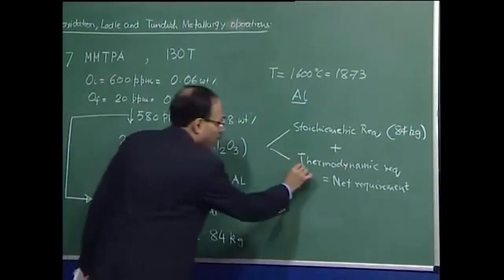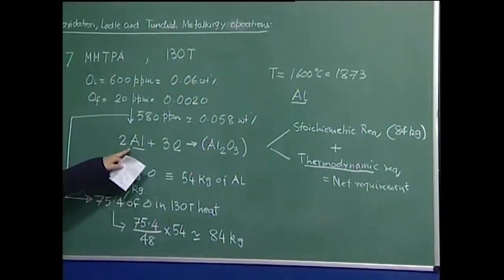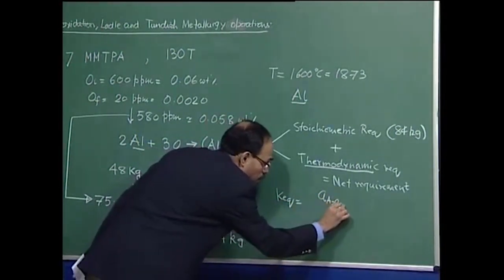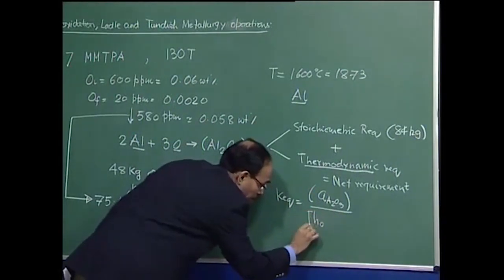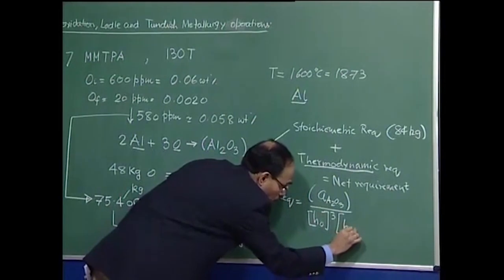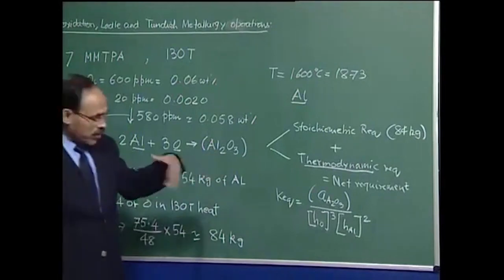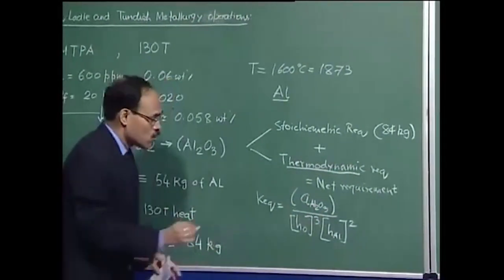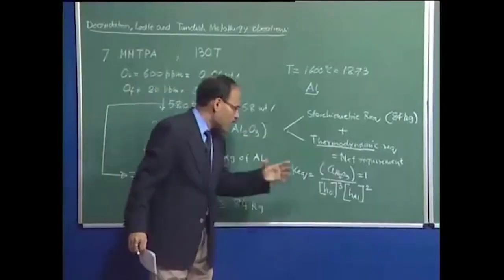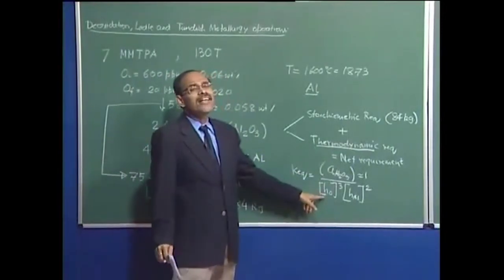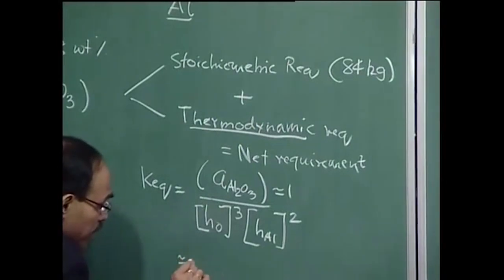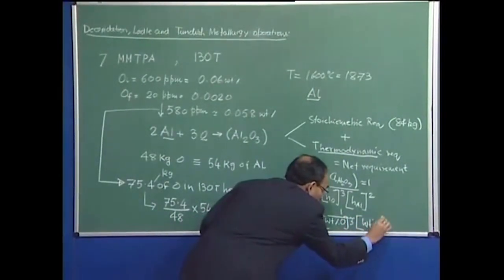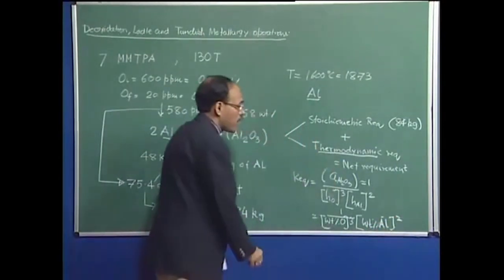Now we have to calculate the thermodynamic requirement, found by considering the equilibrium of this reaction. Writing the equilibrium constant: K = activity of Al₂O₃ in the oxide phase divided by (activity of oxygen)³ × (activity of aluminium)². For simplicity we assume activity of Al₂O₃ equals 1. With the Henrian activity approximated in weight percentage scale, K = 1 / ([wt% O]³ × [wt% Al]²).